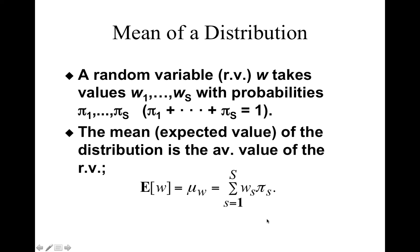Usually, while calculating an average, we divide by the number of observations. Here, we divide by the total weight. But because the weights are probabilities, they sum to 1, and therefore there is still a divisor of 1 there. The mean of a random variable is called the expected value because there is uncertainty involved and we are looking at possible values which have associated probabilities.